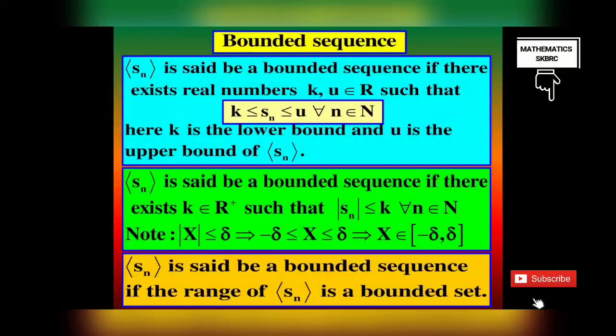Very important definition: Bounded sequence. A bounded sequence can be defined in many ways. The first: a sequence SN is said to be a bounded sequence if it is both bounded below and bounded above. That is, if there exist real numbers K and U belonging to R such that K ≤ SN ≤ U for all N belonging to N. Here K is the lower bound and U is the upper bound of sequence SN.